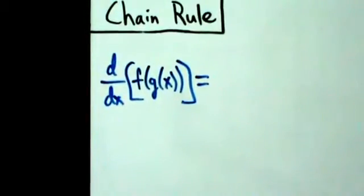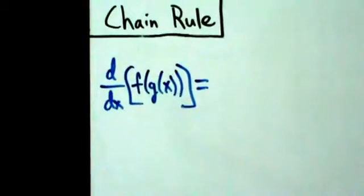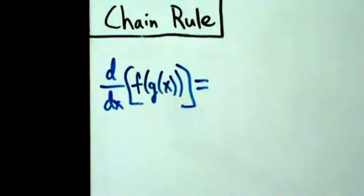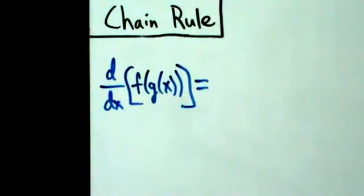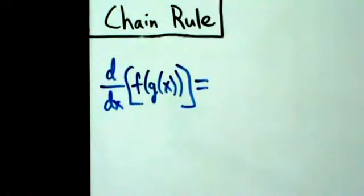In this video we're going to do an incorrect proof of the chain rule, and that sounds incredibly goofy — you're probably wondering why we want to do that. Well, the reason is that this proof actually shows up in quite a number of places on the internet and in a couple textbooks, and it's good to point out what's wrong with the proof.